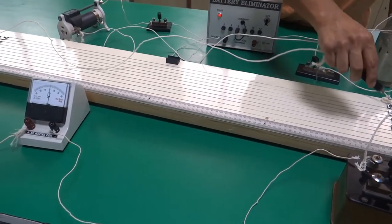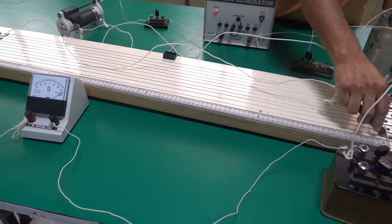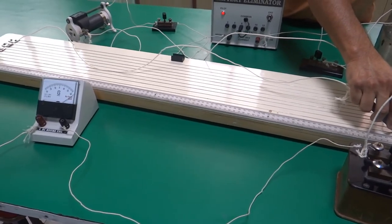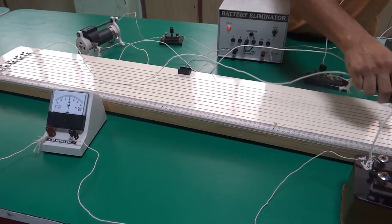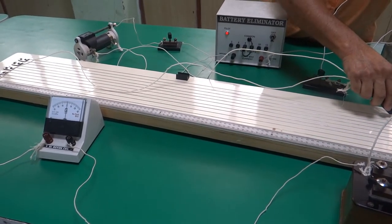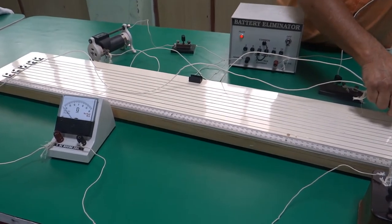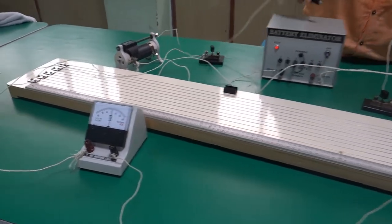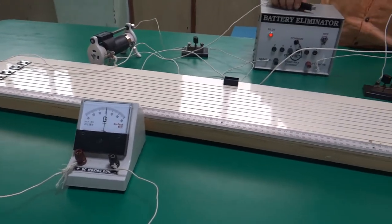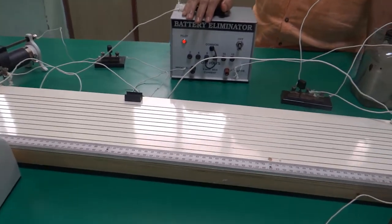Bring the jockey in contact near to the positive terminal of the wire and check the deflection in galvanometer. It is towards right of the zero. Now bring it in contact with the negative terminal. It deflects towards left of the zero. Once you see the deflection in galvanometer is in two opposite directions, it means the circuit is working.